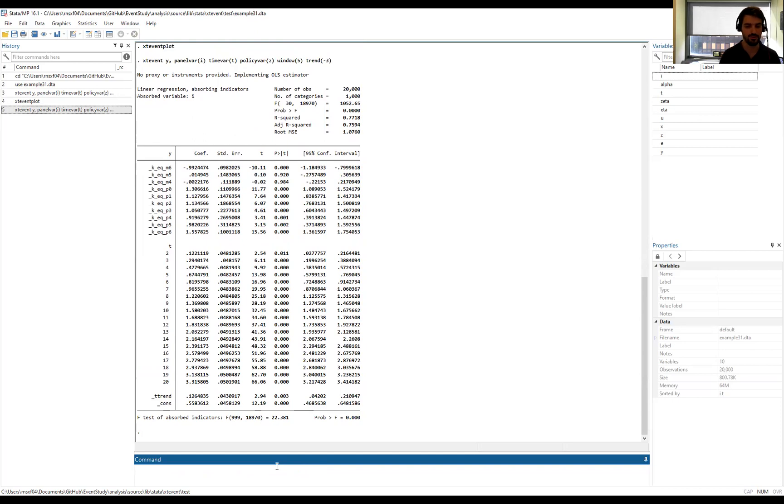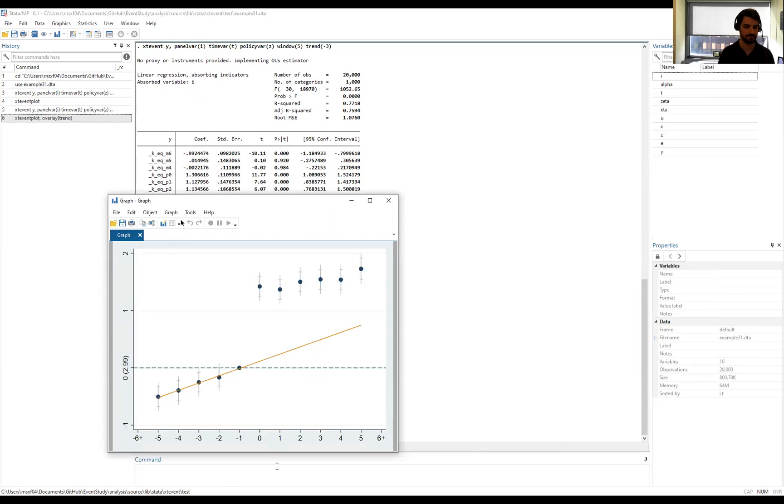Based on that, we can create two kinds of plots. Either one where we overlay the event time path of the outcome with the estimated linear event time trend. We would do so as follows: xtevent_plot, and we want to see an overlay plot with the trend. That gives us this figure over here.